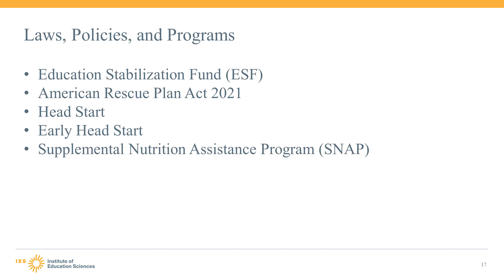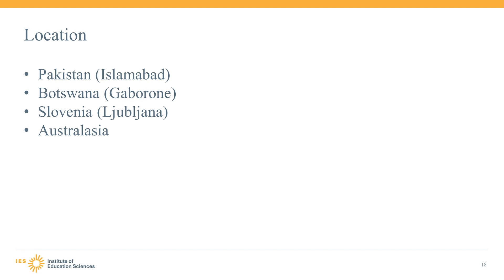In the laws, policies, and programs list, we added some more COVID-19 related terms, such as the Education Stabilization Fund (ESF) and the American Rescue Plan Act 2021. We also added Head Start, Early Head Start, and the Supplemental Nutrition Assistance Program, or SNAP. Finally, we added some new foreign city identifiers to the location list, including Pakistan Islamabad, Botswana Gaborone, and Slovenia Ljubljana. We also added a new regional term, Australasia.